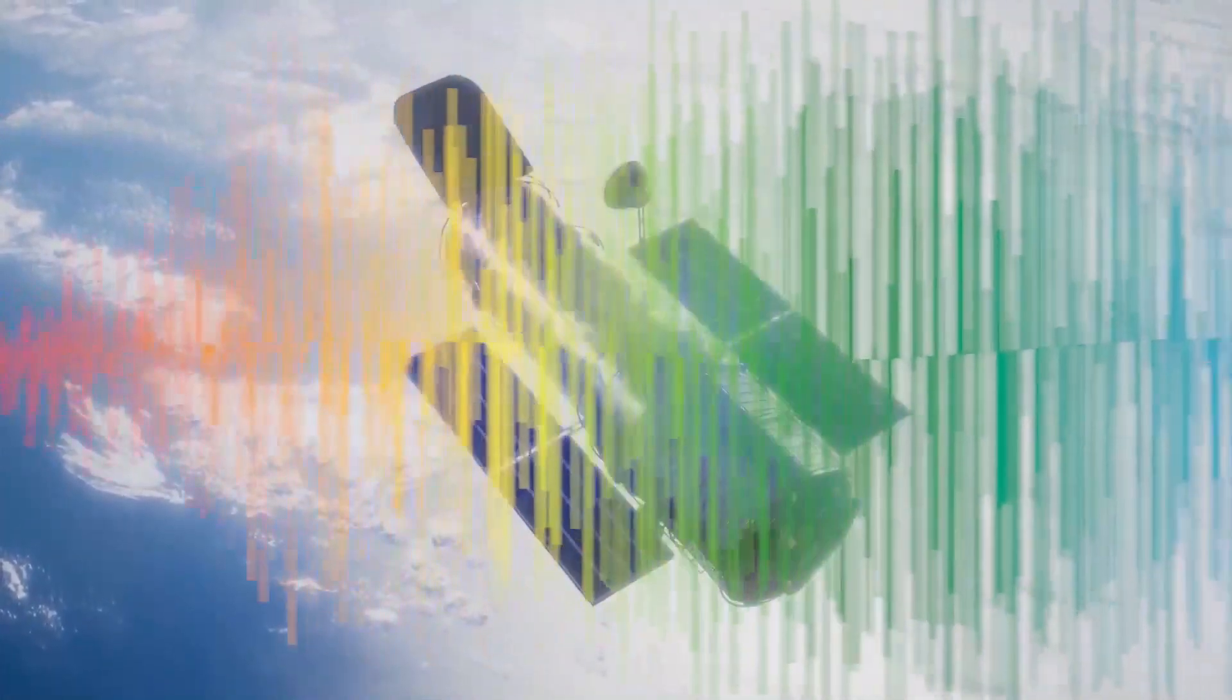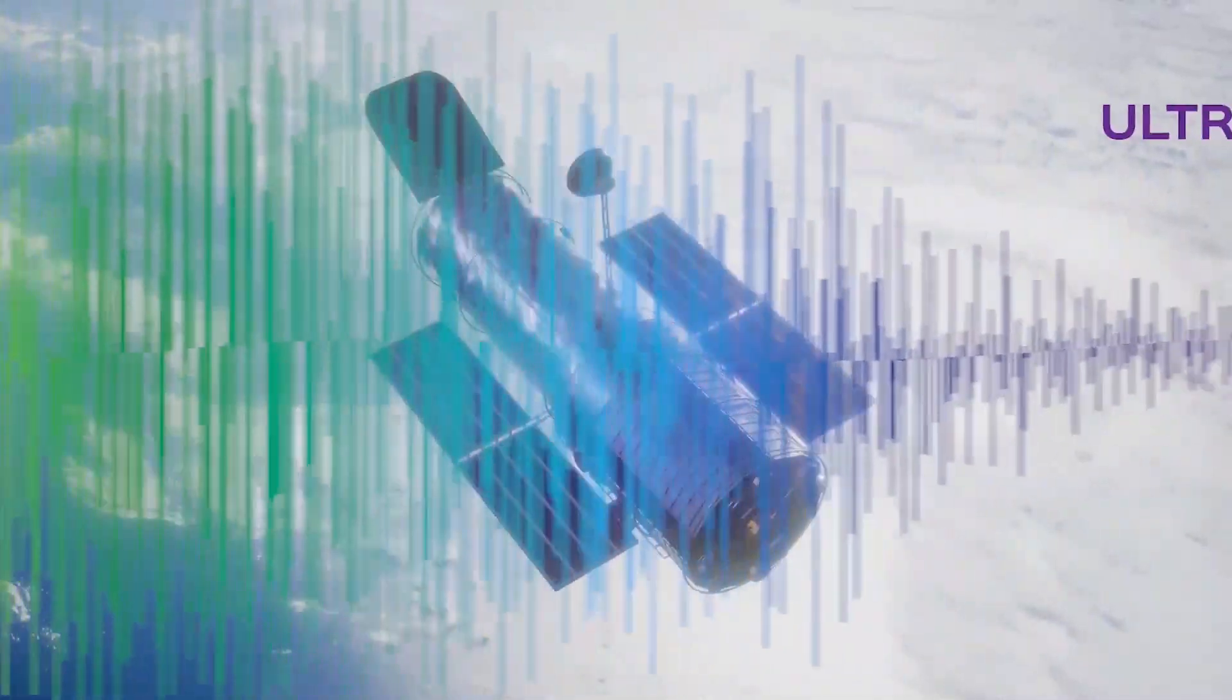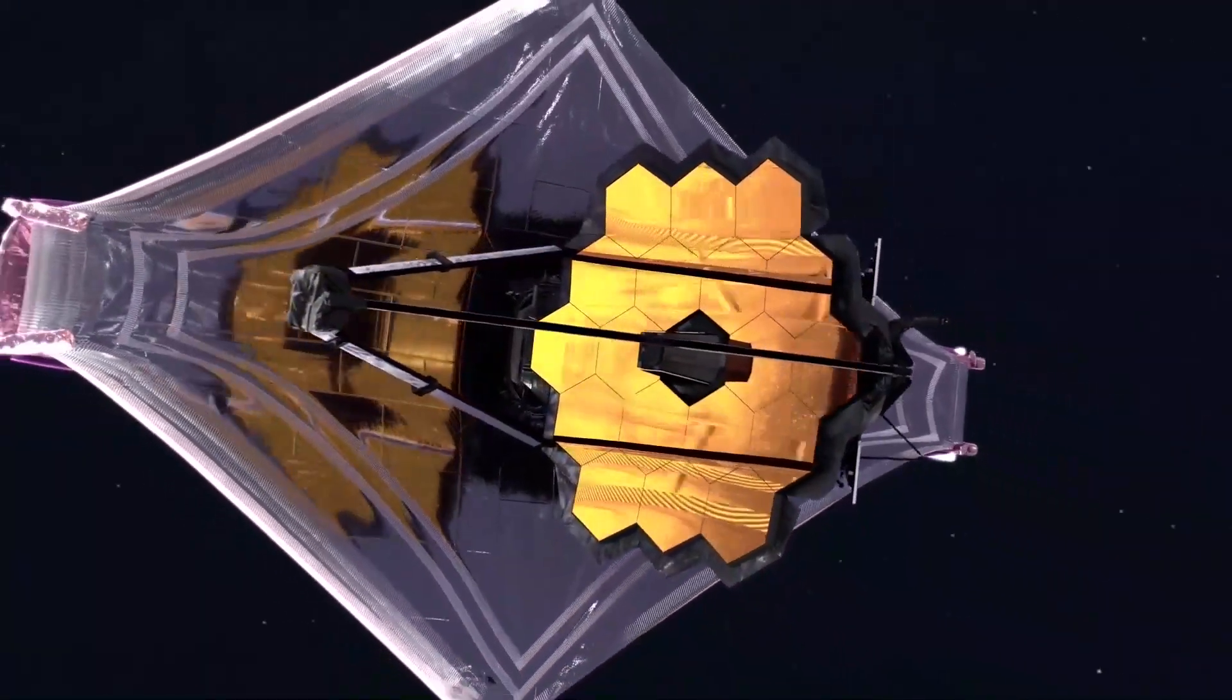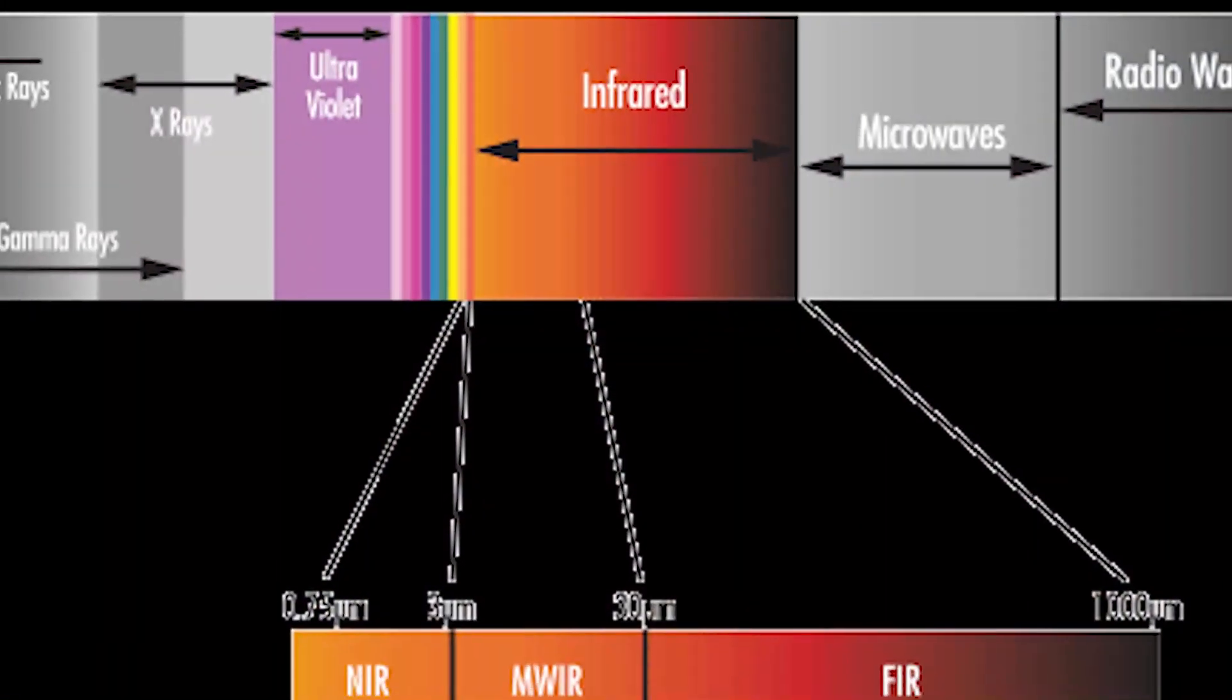Unlike Hubble, which observes in the near-ultraviolet visible and near-infrared spectra, JWST will observe in a lower frequency range from long-wavelength visible light, red, through mid-infrared.